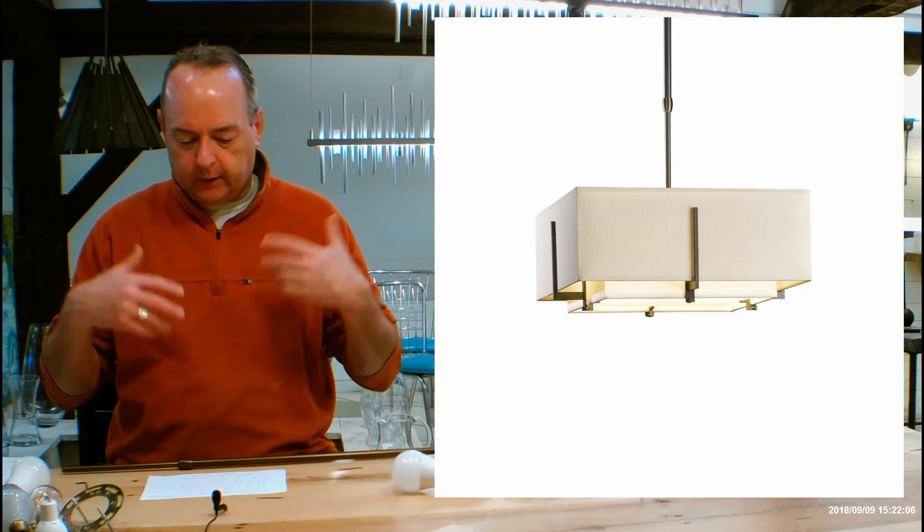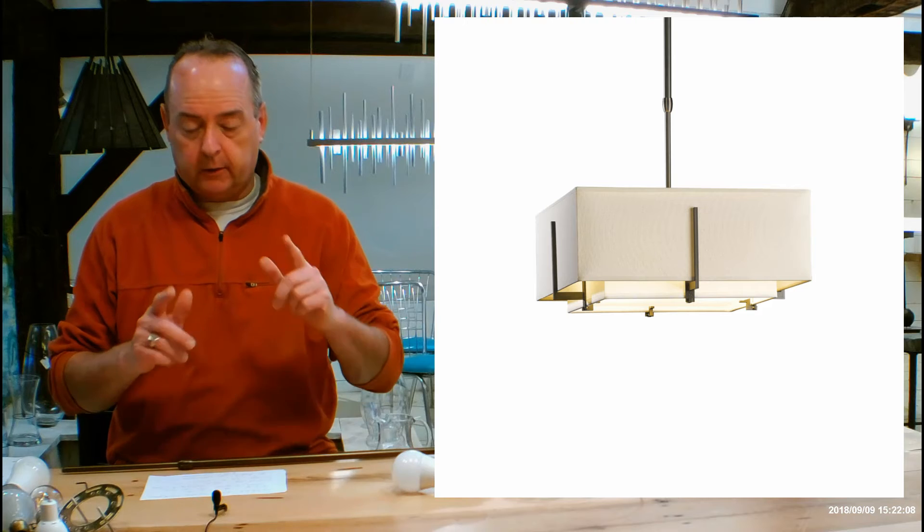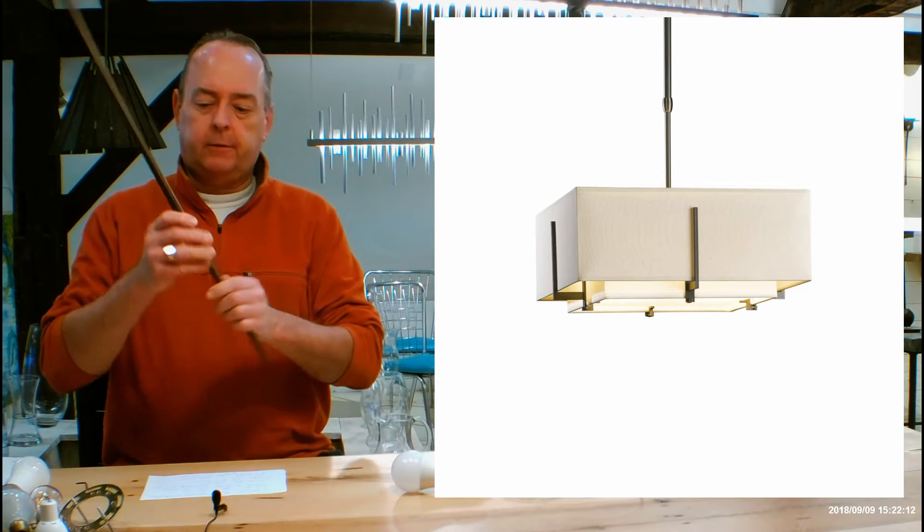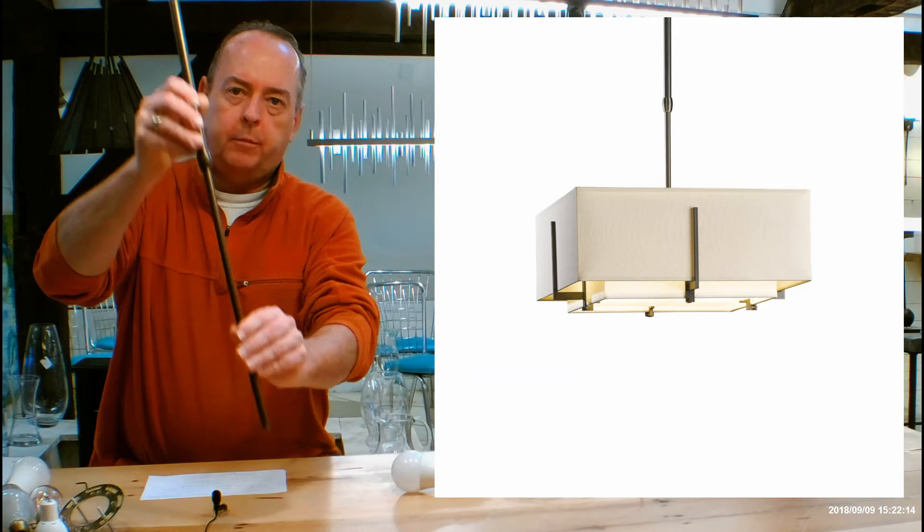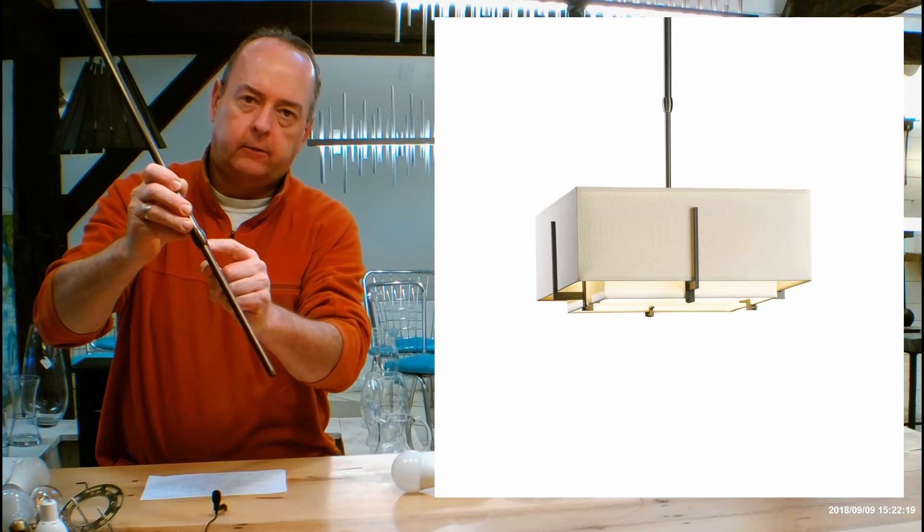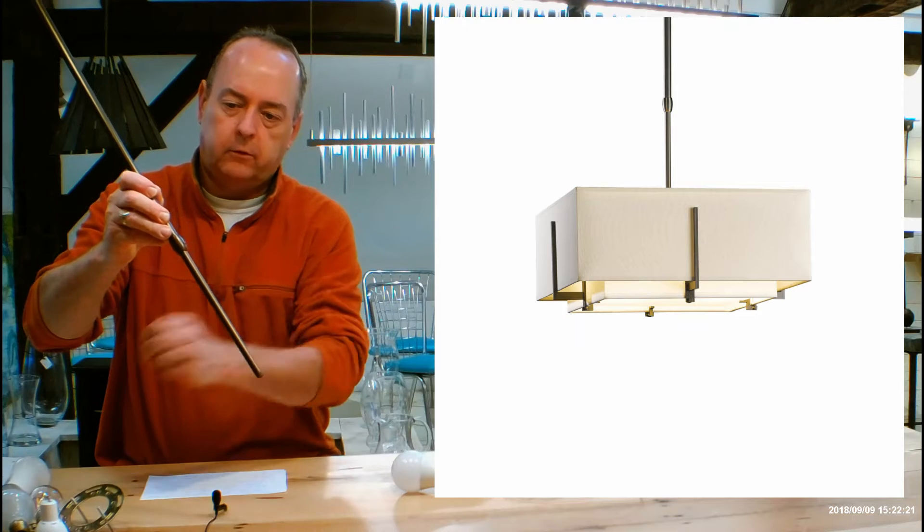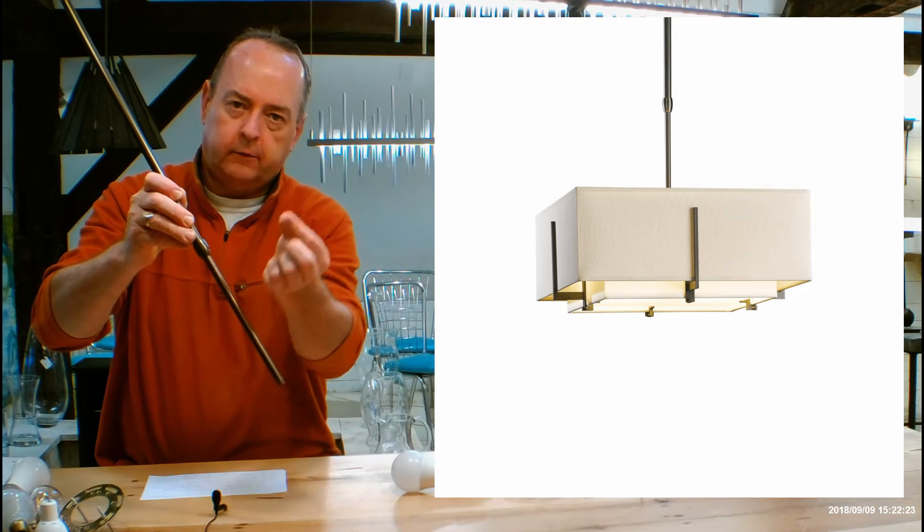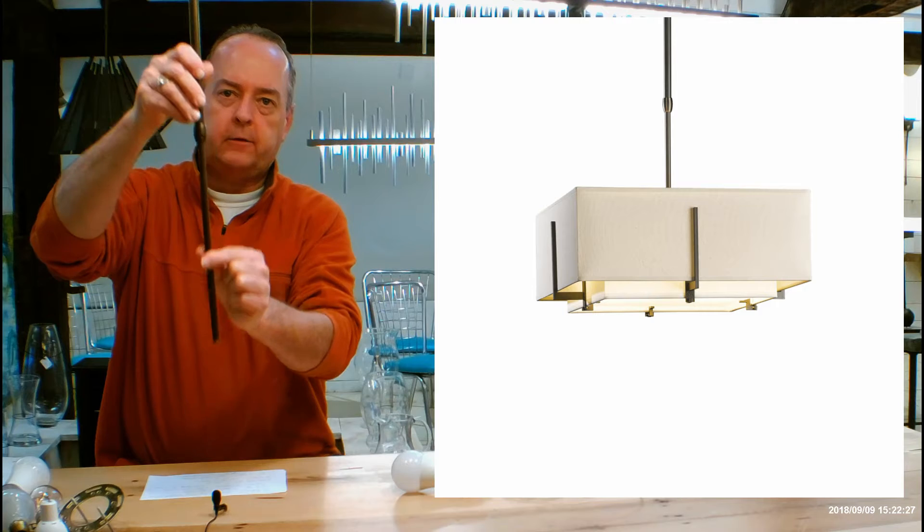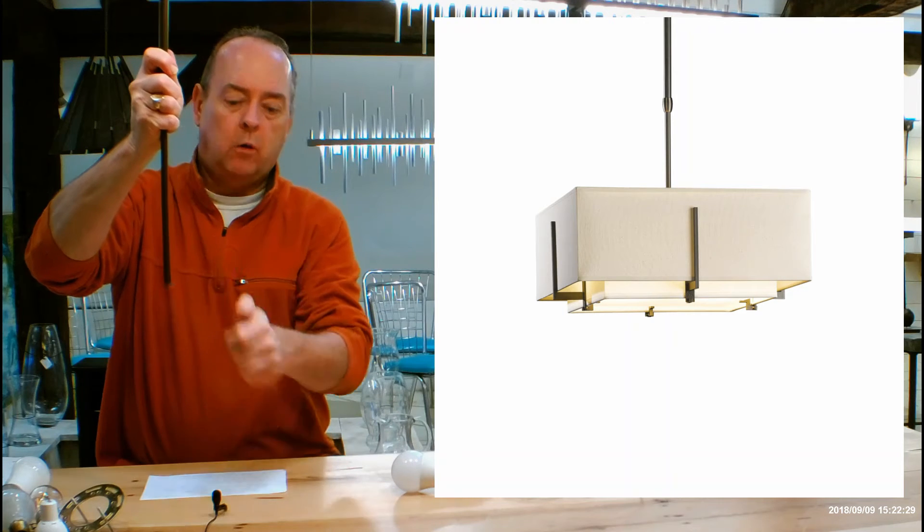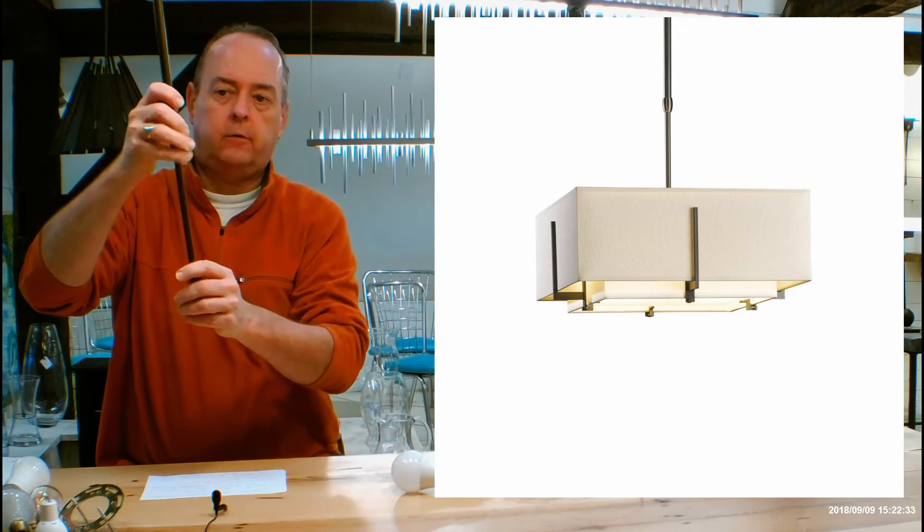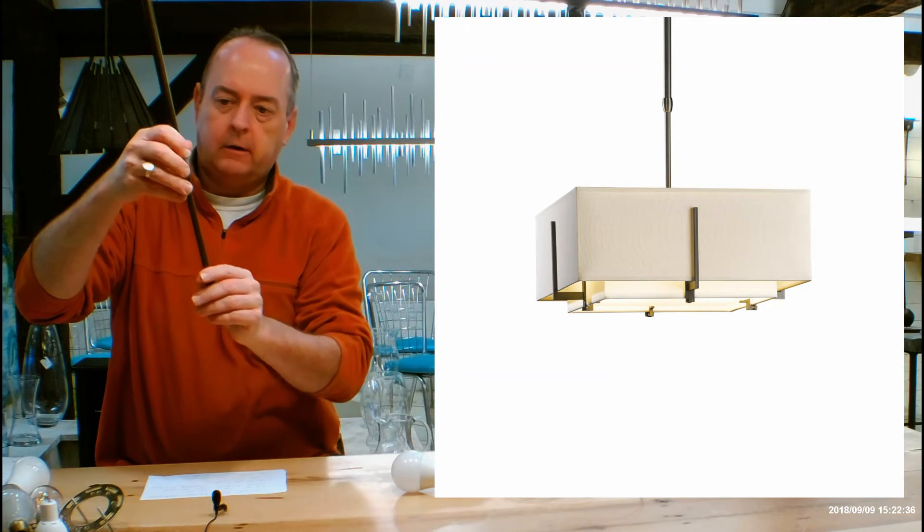And then after that we get into adjustable heights. This is going to be using Hubbardton Forge's patented telescoping rod system. Smaller rod telescopes into a bigger rod, where they come together it's called a clutch, there's a little hex screw right here. This comes with a little hex wrench. During your installation you can bring this up and down to get it as high or low over the table or down from a ceiling as you like within your given ranges.